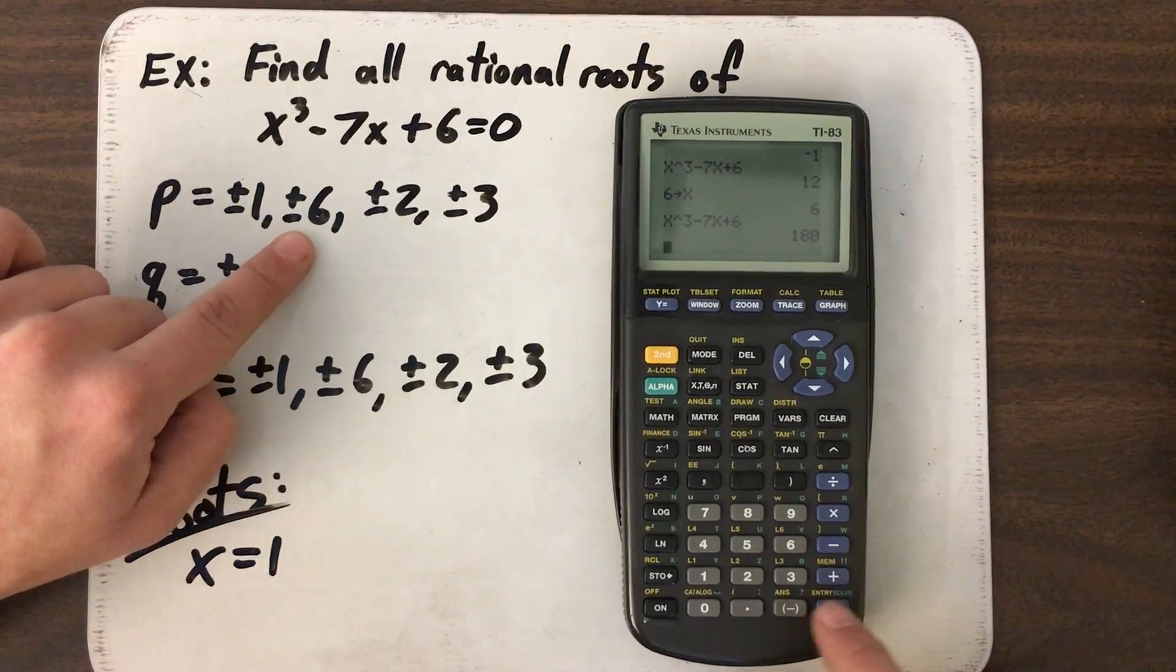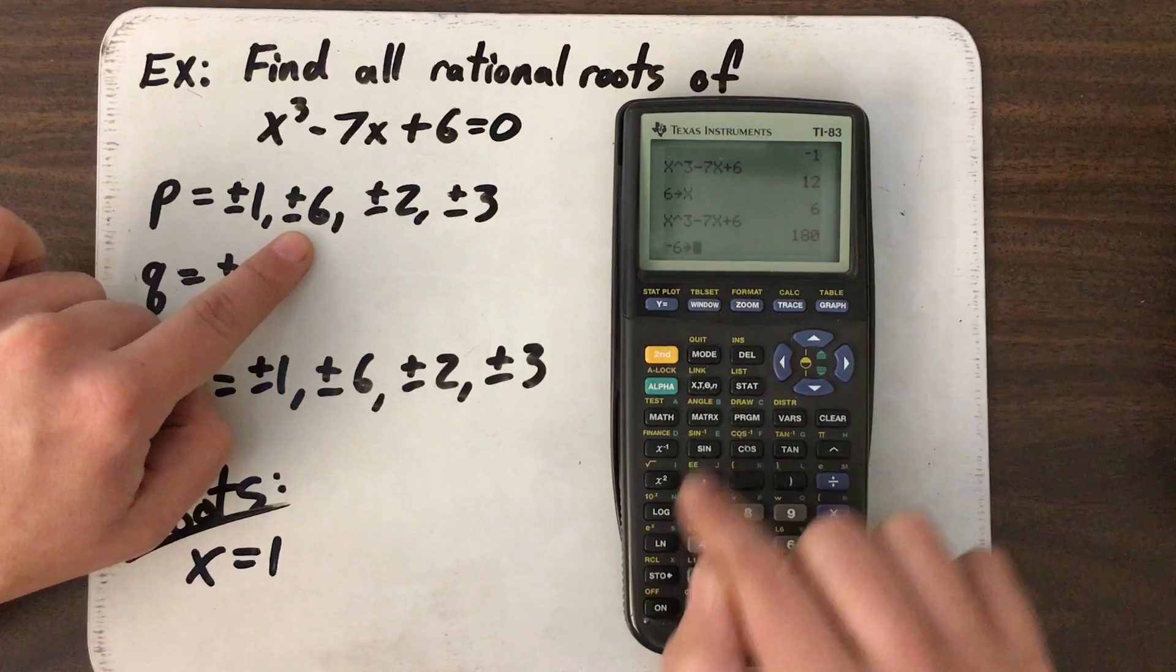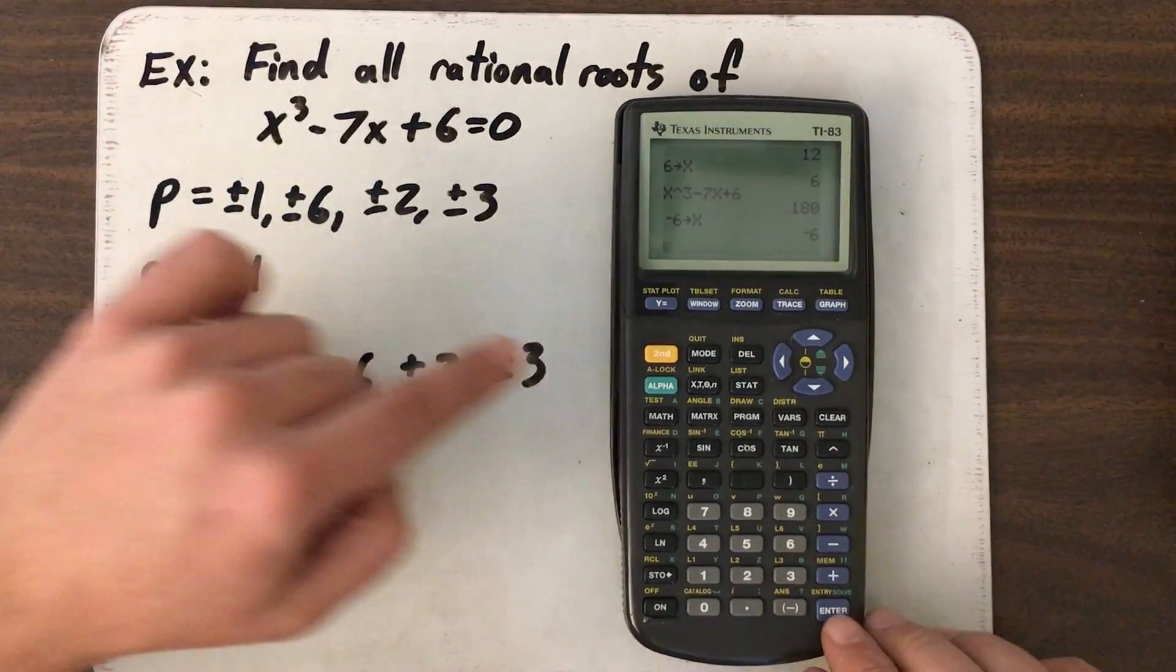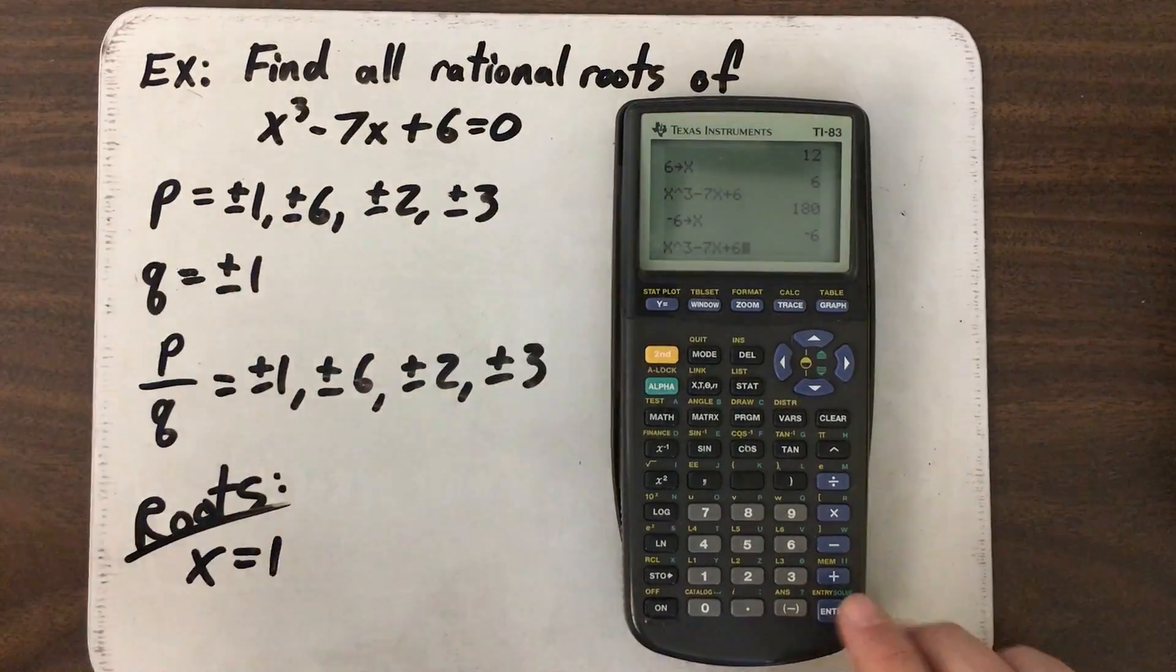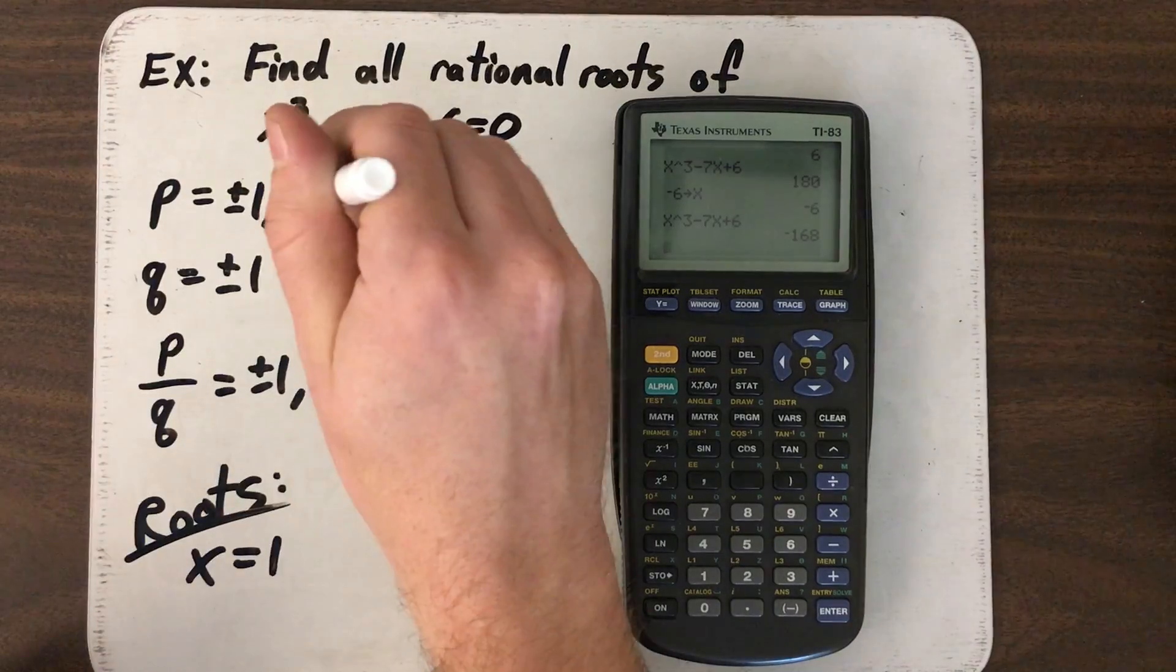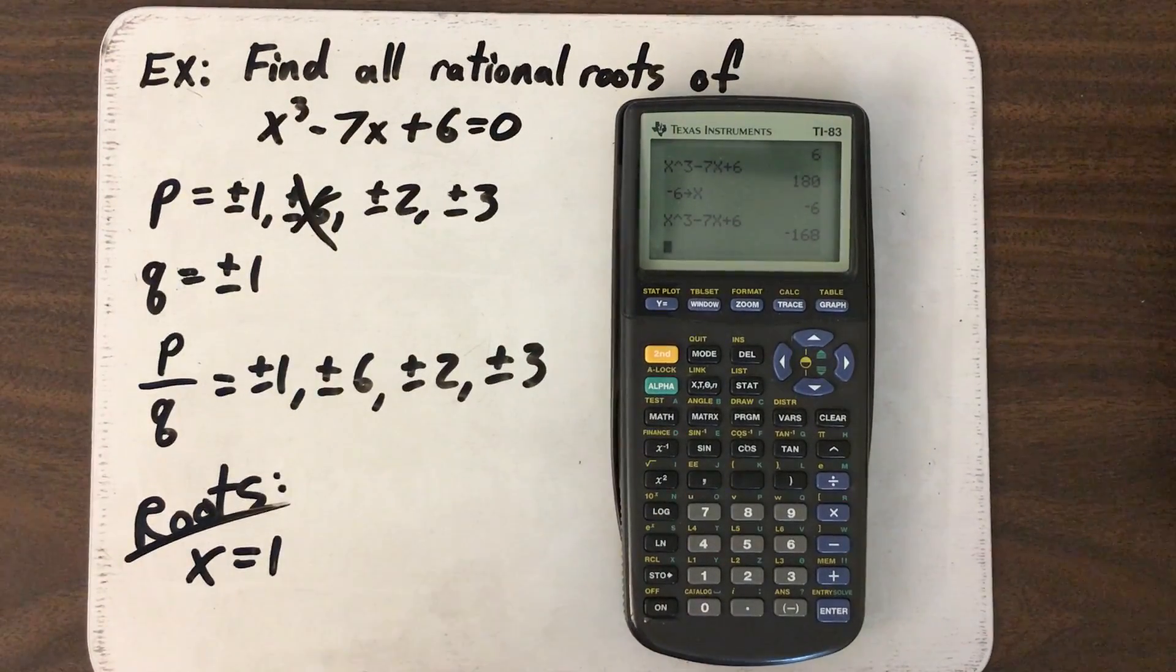Now I want to try negative 6. Negative 6, store, X. Enter. Didn't work. Or I'm sorry, just confirming that. Second, enter. Second, enter. Doesn't work. Get a negative 168. So 6 doesn't give me anything.